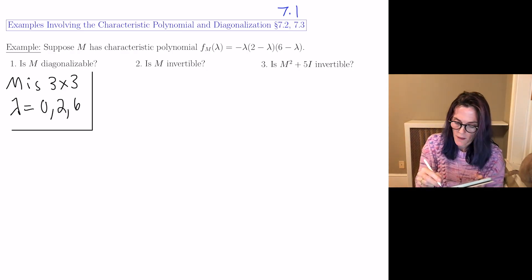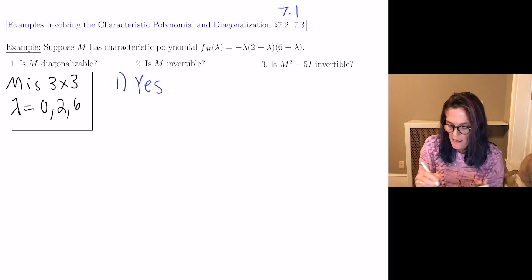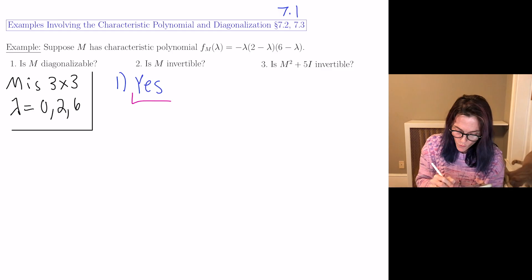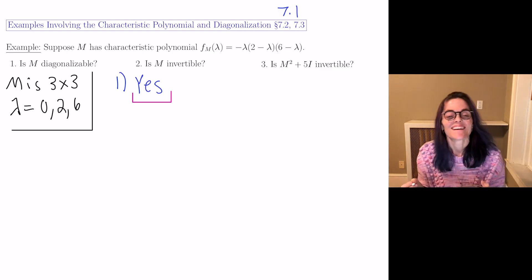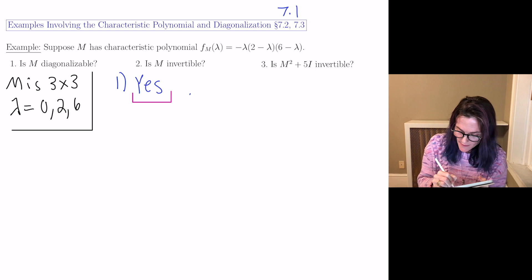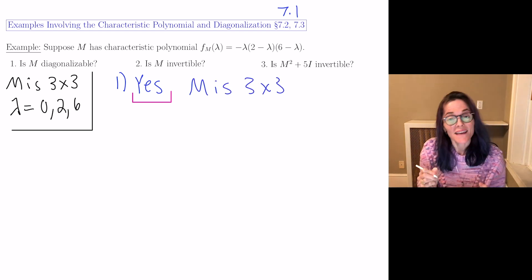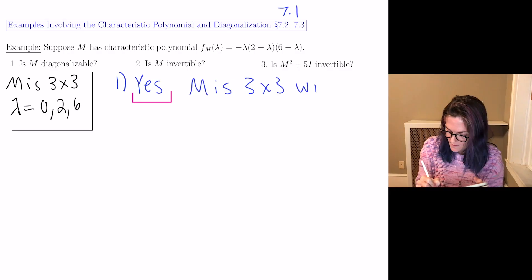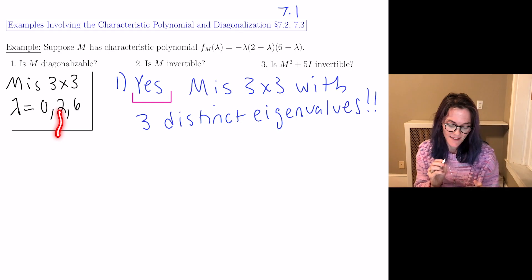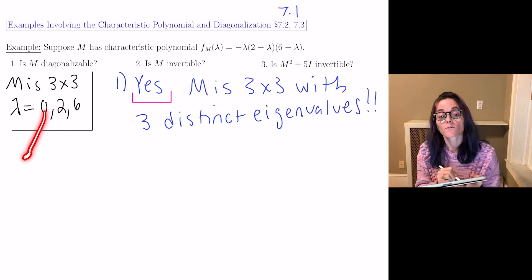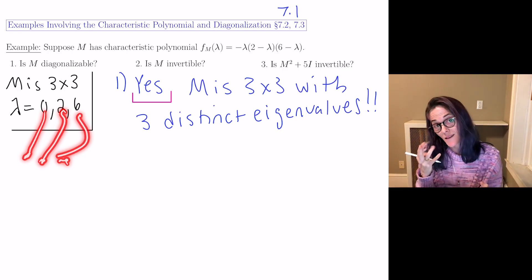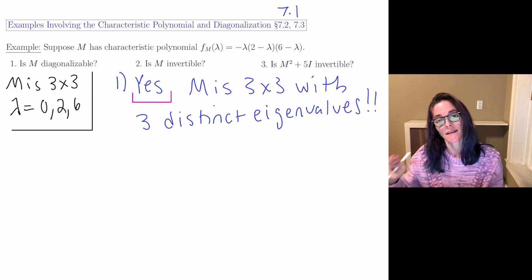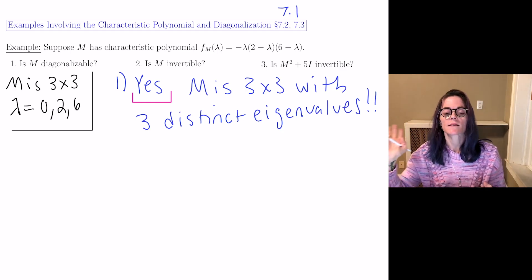First question: is m diagonalizable? Absolutely, the answer is yes. These are all why-or-why-not questions, so I will give a reason for each answer. We have a 3 by 3 matrix with three distinct eigenvalues, so this will be diagonalizable. You can find an eigenvector for lambda equals 0, for lambda equals 2, and for lambda equals 6. Those three vectors will be linearly independent and will form an eigenbasis for m.